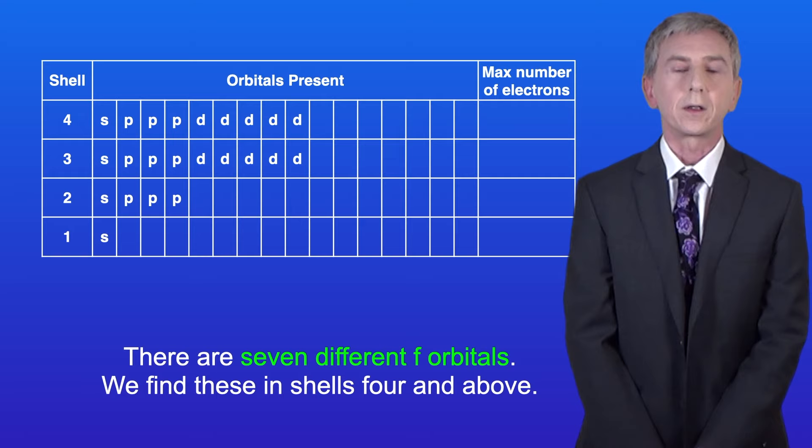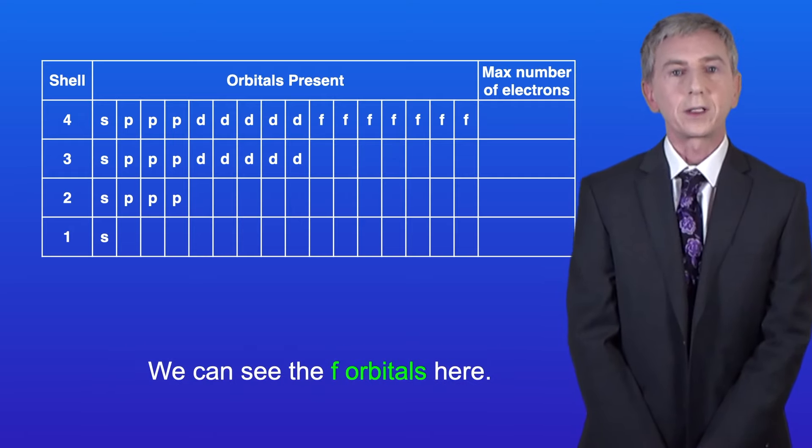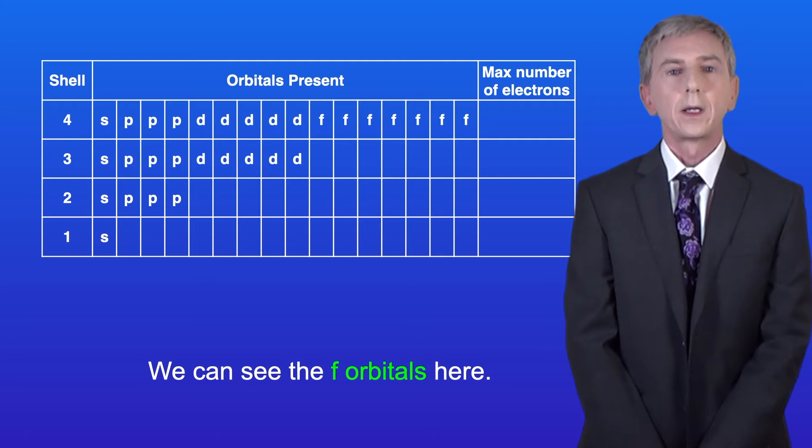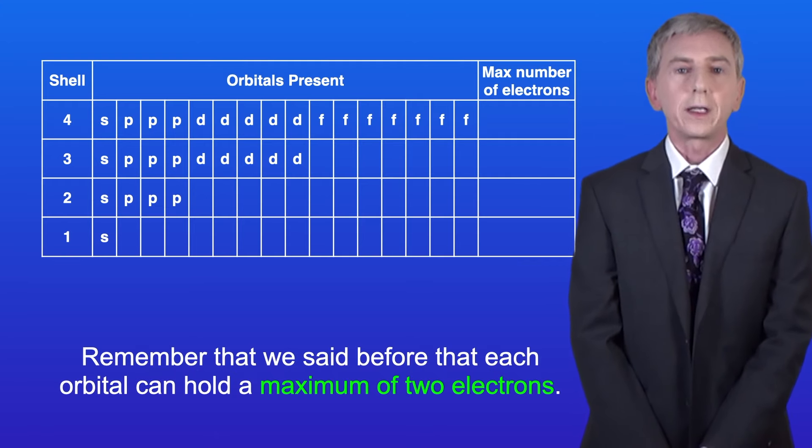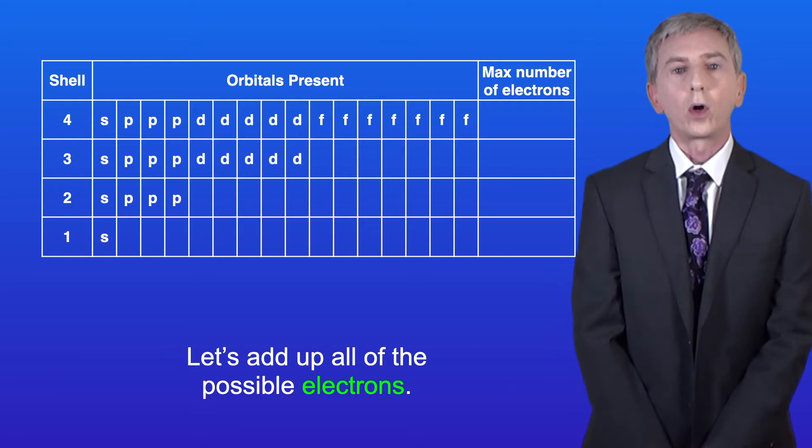There are seven different F orbitals, and we find these in shells four and above, and we can see the F orbitals here. Now remember that we said before that each orbital can hold a maximum of two electrons, so let's add up all of the possible electrons.